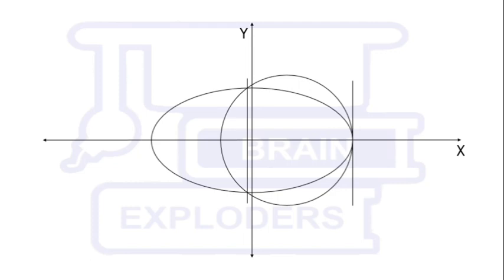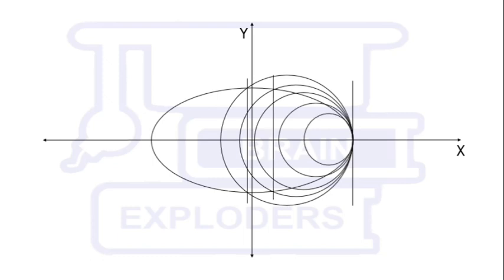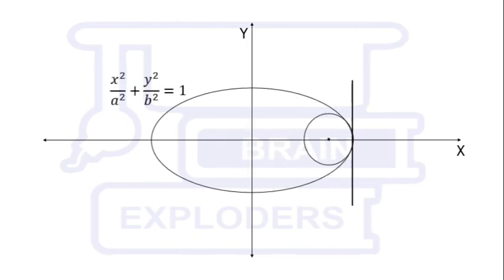But if we fix this point where the circle is touching the ellipse and keep decreasing the radius, we find that the other intersection value approaches this first value, and after a particular radius they both become the same. This is the radius after which the circle would not be able to intersect the ellipse four times. We have to find the radius of this circle.